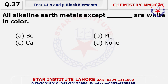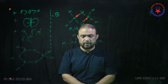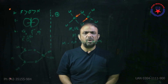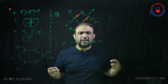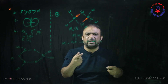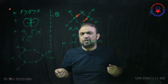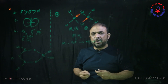Question number 37: All alkaline earth metals except beryllium are white in color. Choice A is your answer — beryllium is the only one which is gray in color. Question number 38: The heat of hydration decreases from top to bottom. B is the answer. When we go from top to bottom, charge density is reduced — size increases within a group so charge density decreases — and therefore water attraction (heat of hydration) also decreases.